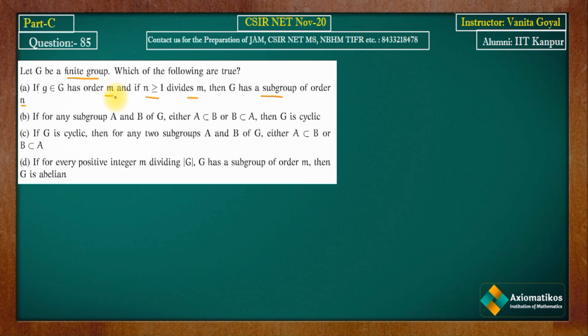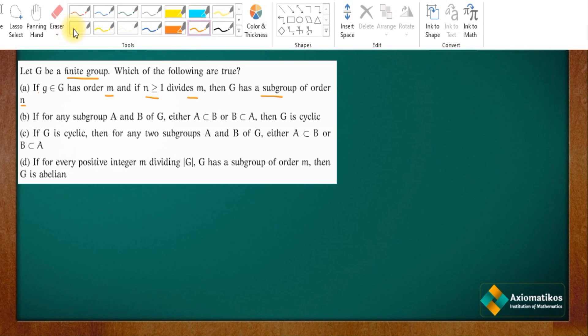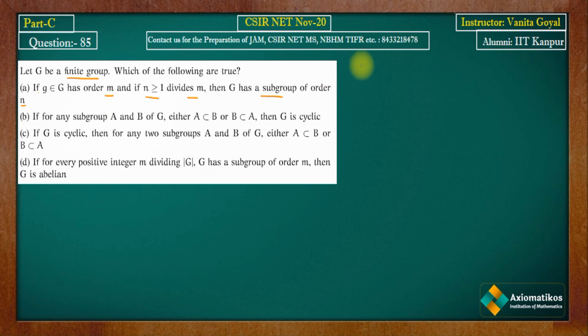So we are asked whether, given an element of order m and a positive divisor n of m, G must have a subgroup of order n, where |G| = m.